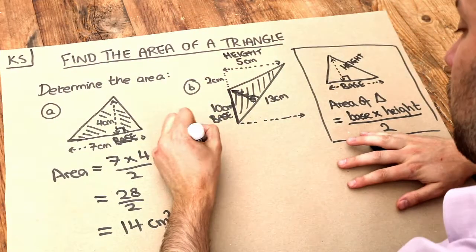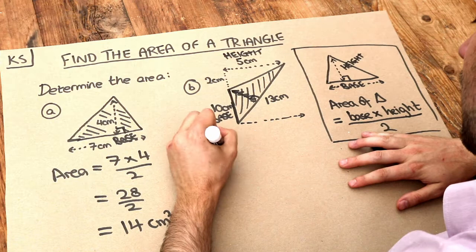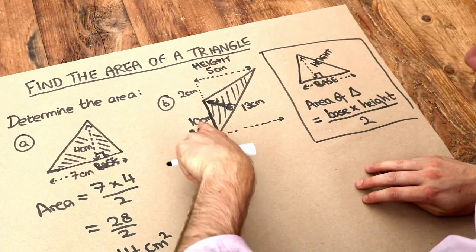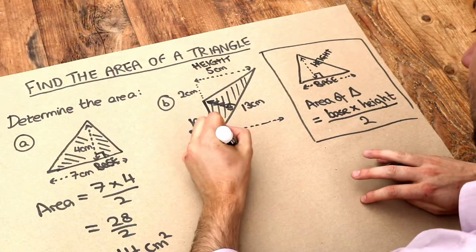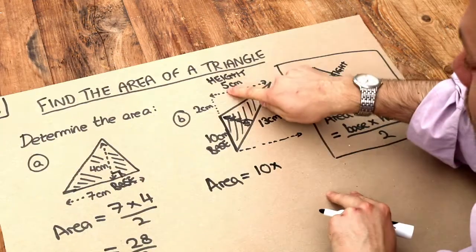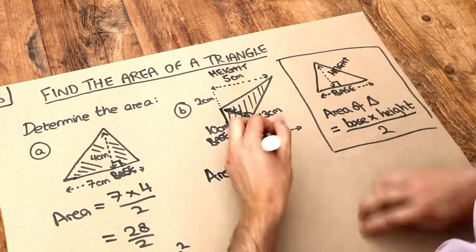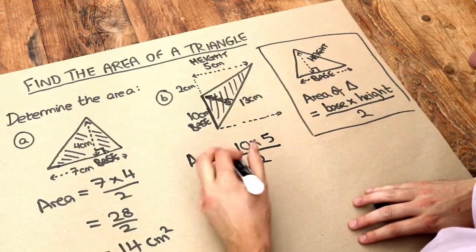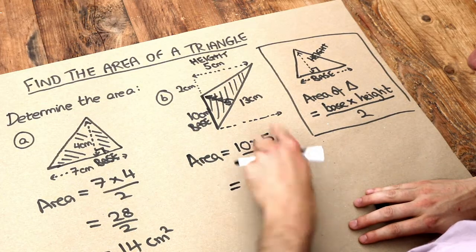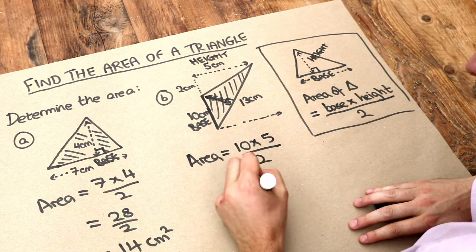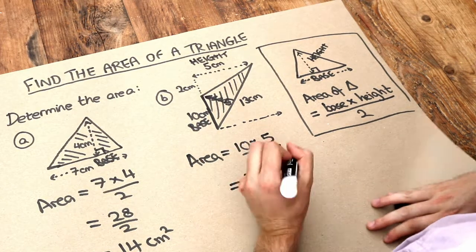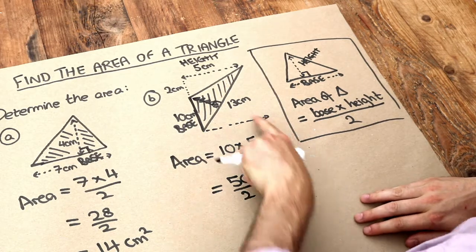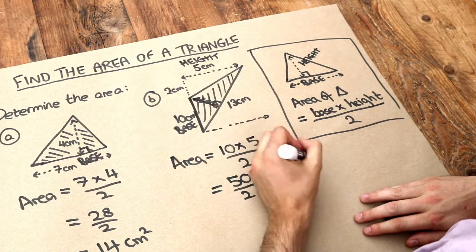So we're going to use our same formula. The area is equal to the base, which is 10, times by the perpendicular height, which is 5, divided by 2. Now 10 times 5 is 50, divide by 2, and that is equal to 25. And again, these are in centimetres, so the unit will be centimetres squared.